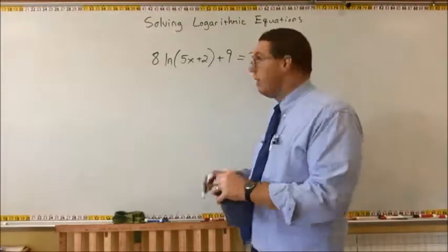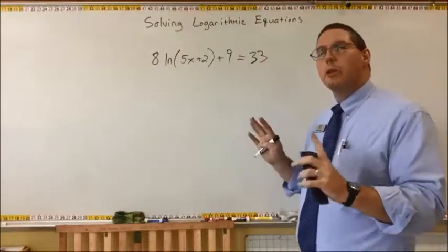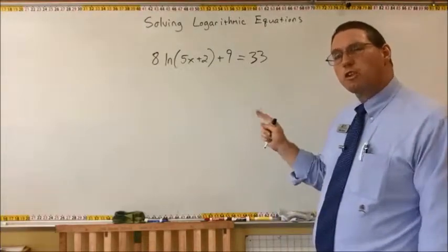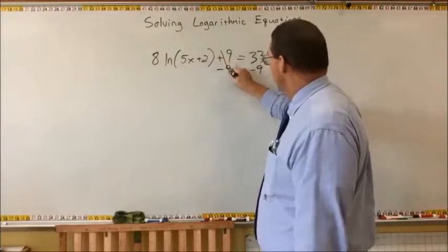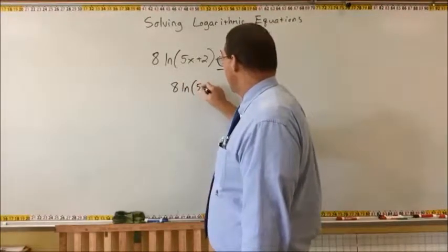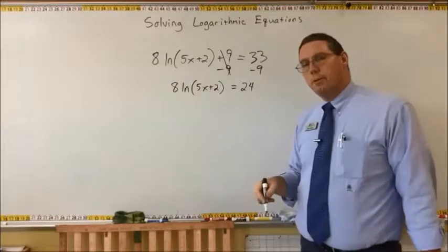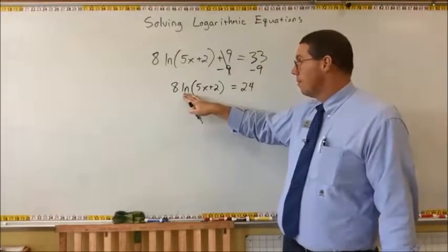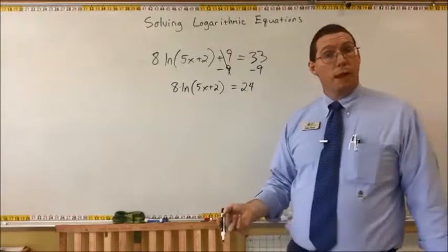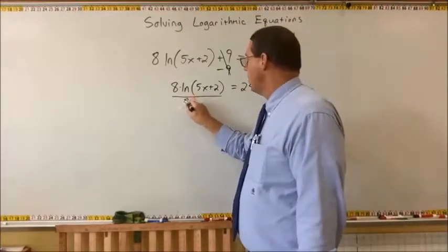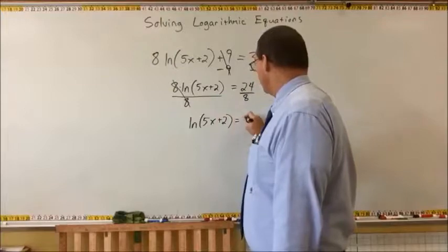Hopefully you had a chance to try this one. If you weren't sure, do it along with me one step at a time. The first thing we should do is get rid of the plus 9 — subtract 9 on both sides — leaving us with 8·natural log of (5x plus 2) equals 33 minus 9, which is 24. Next, I can't cancel this logarithm until that 8 is gone — it's multiplying — so we divide by 8 on both sides. We've got the natural log of (5x plus 2) is equal to 24 divided by 8, which is 3.